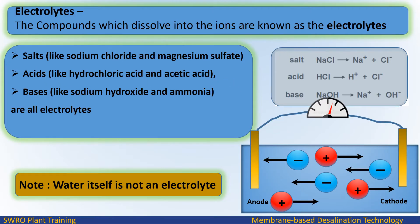Electrolytes are the compounds which dissolve into ions. Salts, like sodium chloride and magnesium sulfate; acids, like hydrochloric acid and acetic acid; and bases, like sodium hydroxide and ammonia — are all electrolytes.